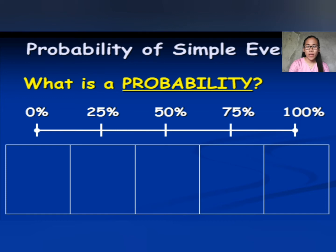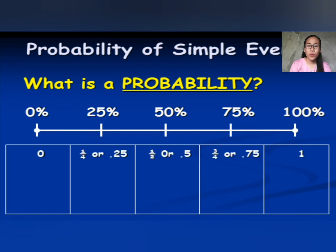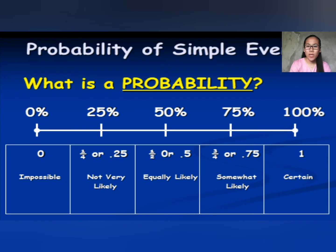The probability scale ranges from 0% to 100%. At 0%, it is impossible. At 25% or 1/4 (0.25), it is not very likely. At 50% or 1/2 (0.5), it is equally likely. At 75% or 3/4 (0.75), it is somewhat likely. And at 100% or 1, it is certain.